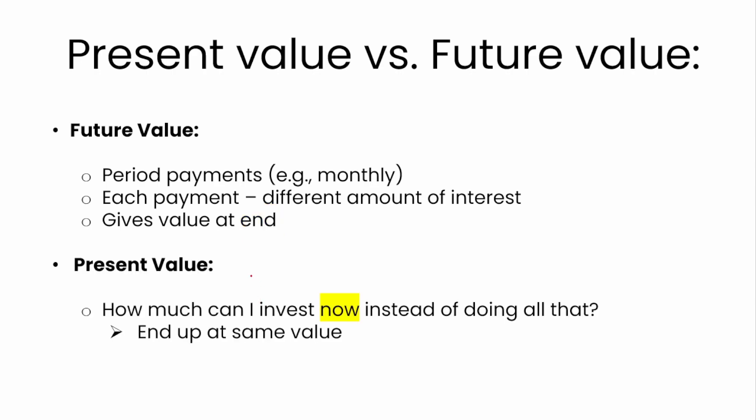Today we're doing the present value. The present value asks: if you don't want to deal with investing money every month, how much can you just invest now instead, but still end up at the same value at the end? That's what the present value deals with — the present value of money. Think about it: if I gave you a hundred rand now versus a hundred rand in a month, which is worth more? Money in the present is worth more, because it can be invested to earn interest. Money in the future can't be invested now, so it loses some of its value.